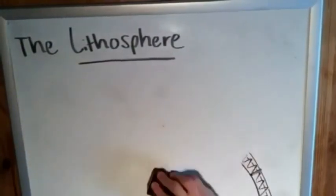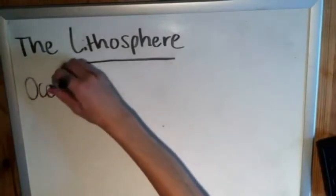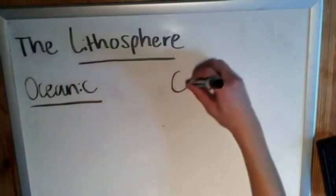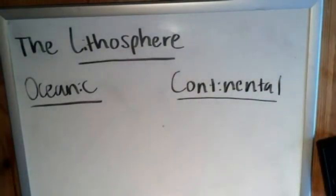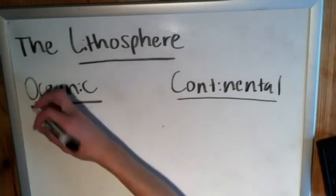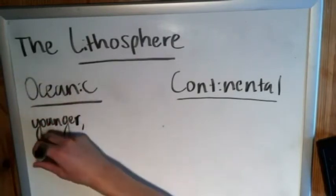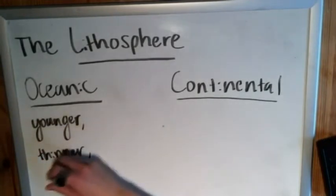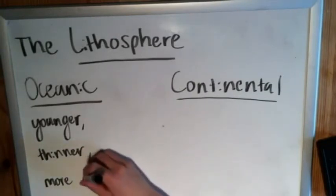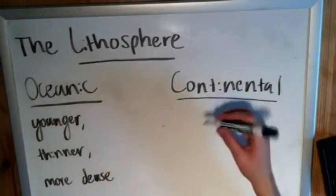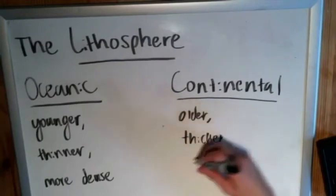Similar to the crust, the lithosphere can be divided into oceanic lithosphere and continental lithosphere. Many of the properties we discussed with oceanic and continental crust remain true here. Oceanic lithosphere is younger, thinner, and more dense — by about 0.2 grams per centimeter cubed — while continental lithosphere is older, thicker, and less dense.